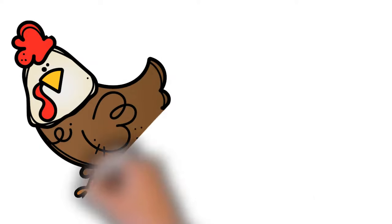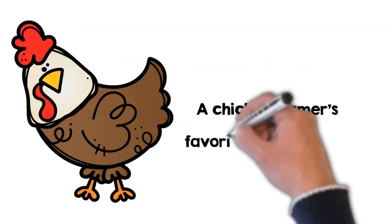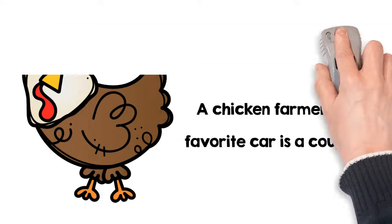Here are some examples. A chicken farmer's favorite car is a coop. A coop can be a cage for small animals, especially birds, or a car that has two doors.